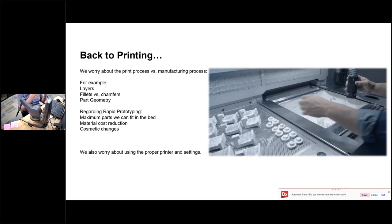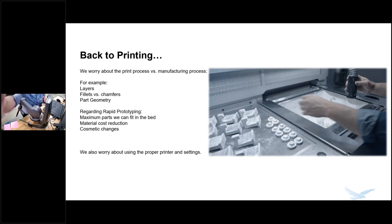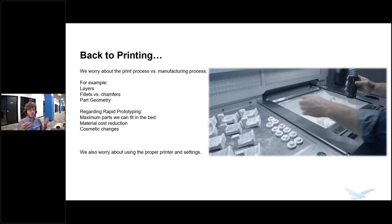I want to bring it back to the printing side of things — things we worry about when it comes to prints versus actual designs or manufacturing. When it comes to printing, we're worried about layers, how our design is laid out to actually get the proper fillets and chamfers, and part geometry — can we actually fit our filament into the object? Another thing we're worried about in rapid prototyping is material cost: if we're going to be making a bunch of versions, how do we optimize that, as well as maximizing the parts that fit in a bed? These are different factors, as well as maybe a cosmetic change. Instead of the manufacturing process, we're worried about how do we make sure things line up with one another and how do we optimize this to the best of our ability. This is something that printer settings and different printers can fix.